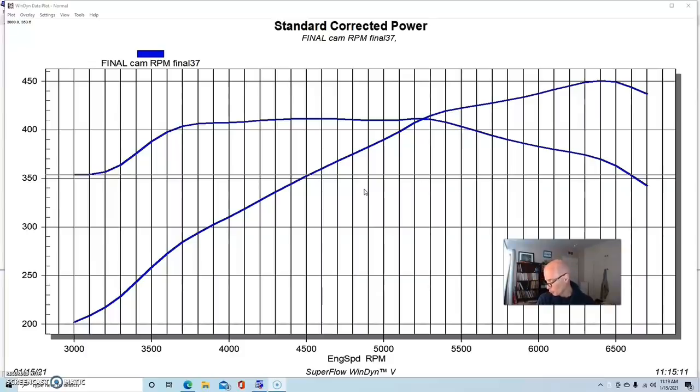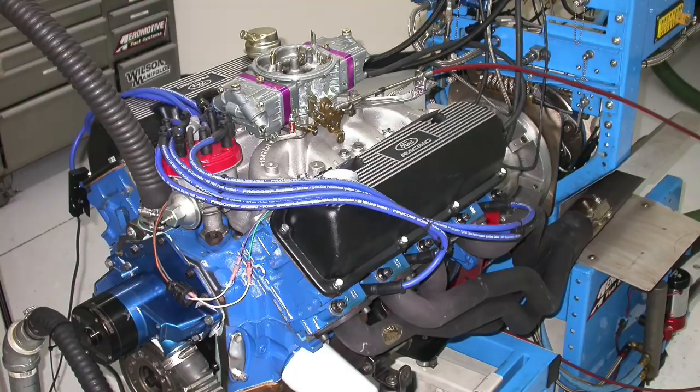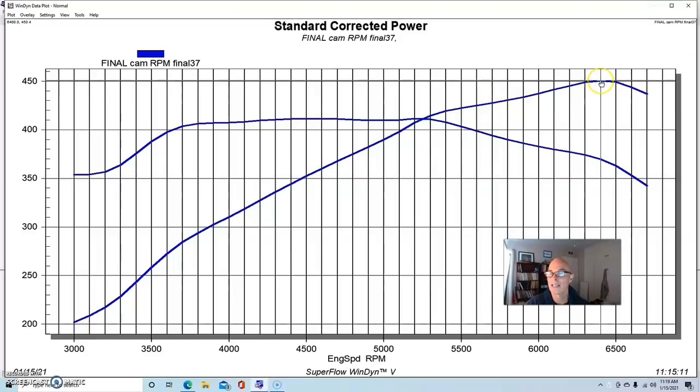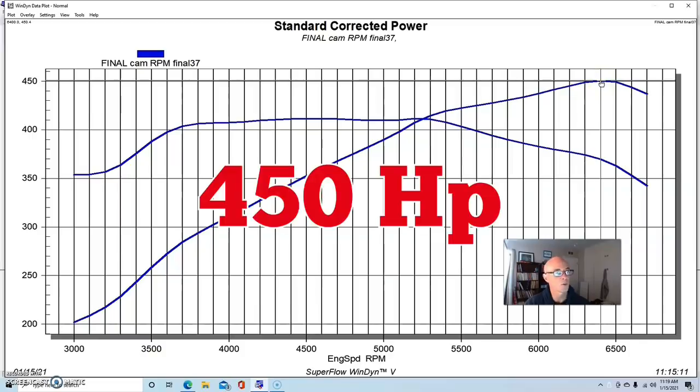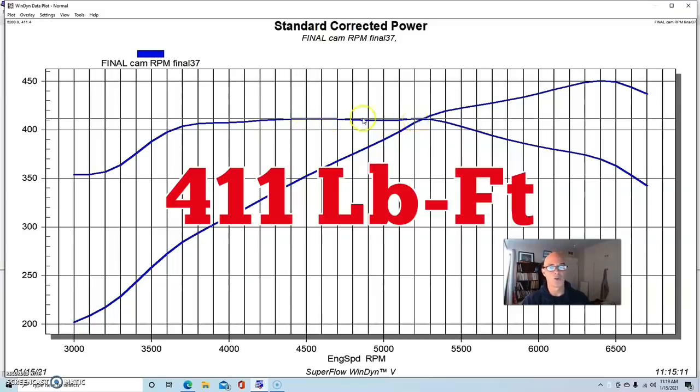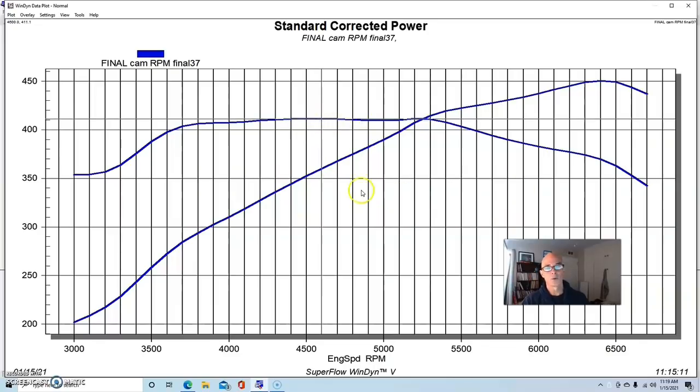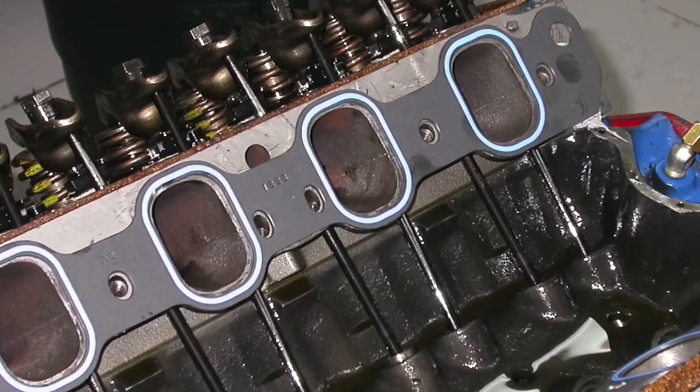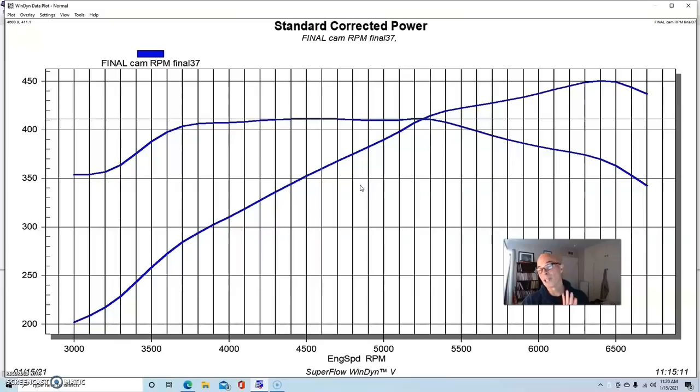Now we first ran this with the dual plane combination, the RPM air gap and equipped with that intake manifold, our 351 Cleveland produced 450 horsepower, 450.4. And you could see a nice flat torque curve here with a peak of 411 foot pounds. 411 foot pounds of torque. So this combination did very well, nice and flat. The 4V heads have plenty of airflow. They can support a lot more power than this. They could support a hundred more horsepower than this. So if we had enough camshaft and everything, that combination, the cylinder heads flow really well as a 4V.